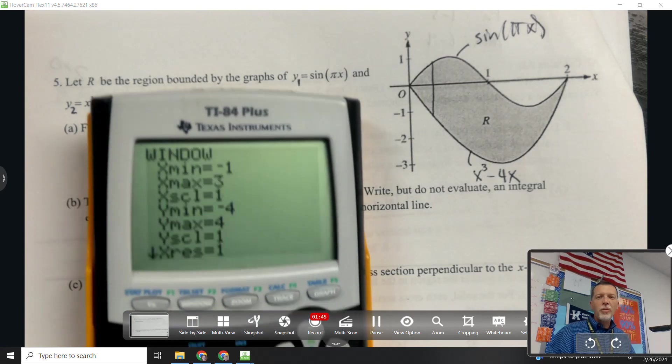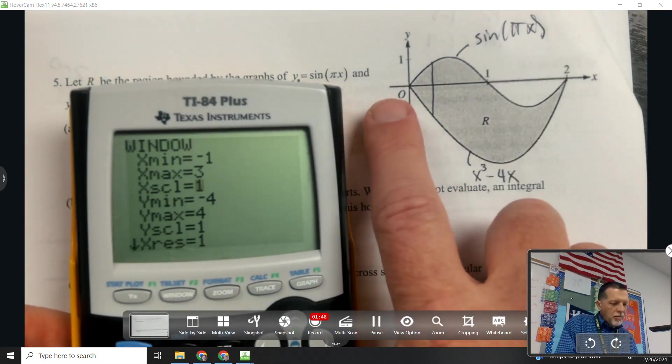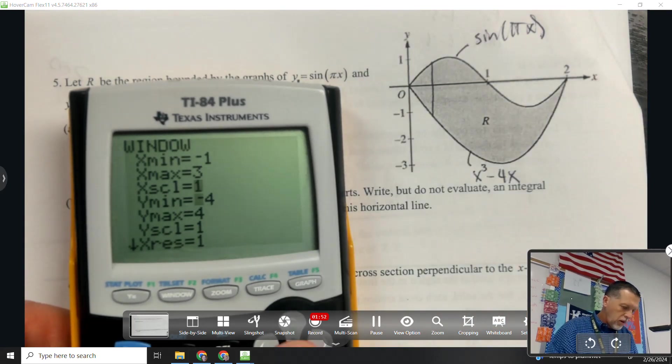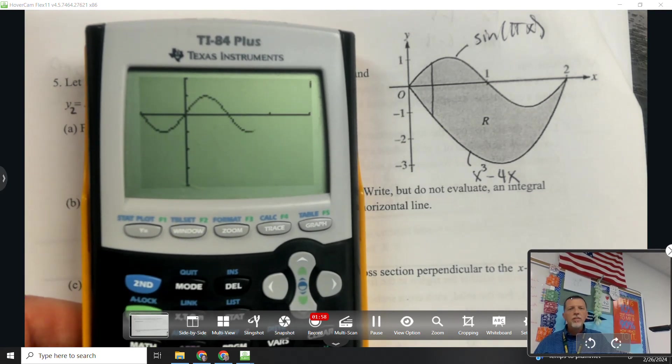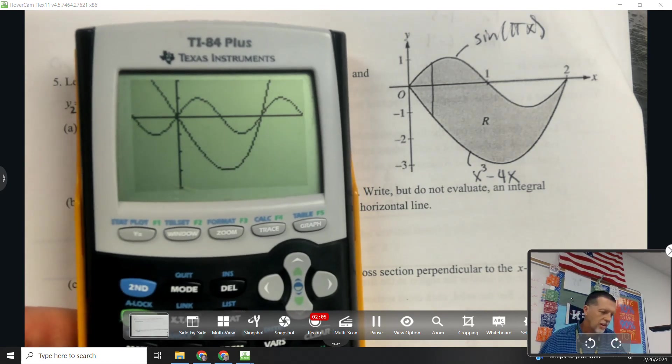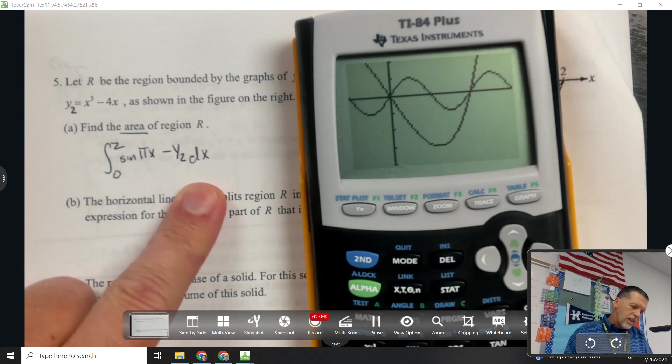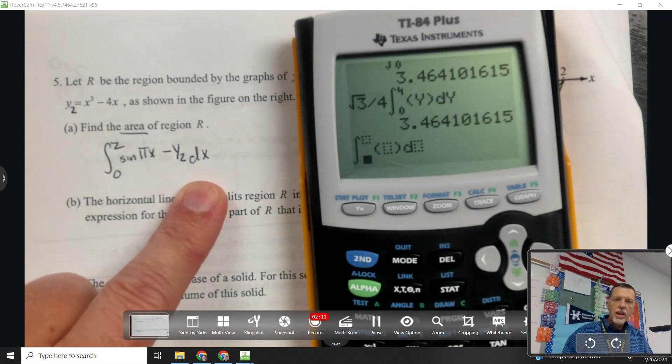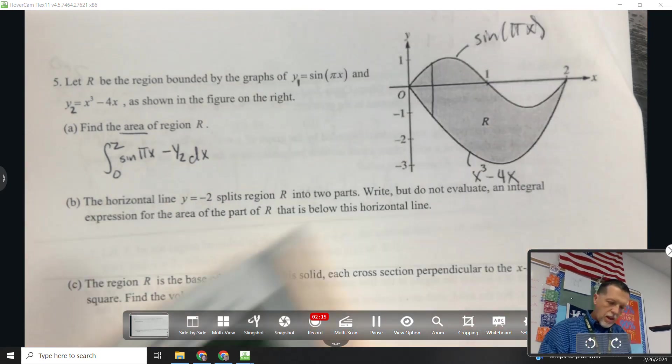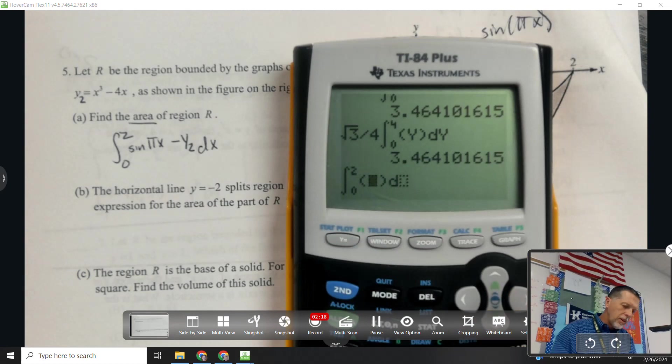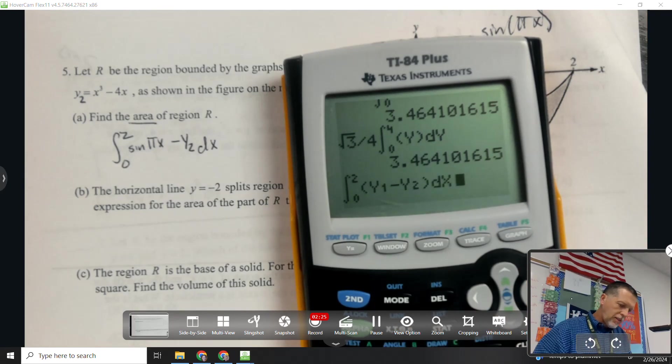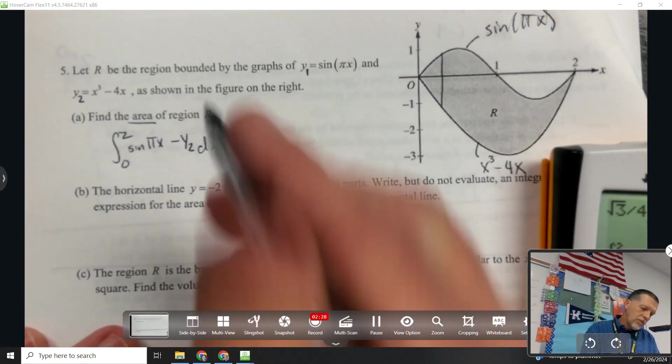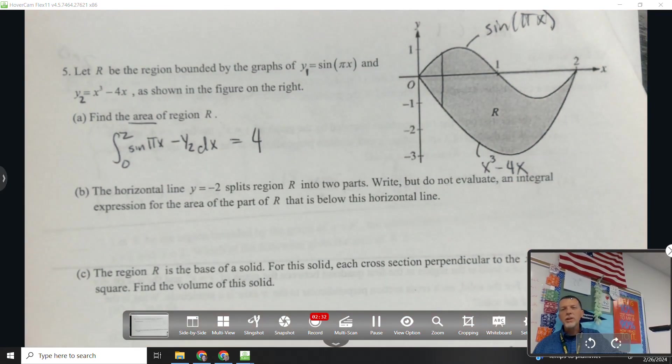May as well graph it to make sure I'm looking at the right thing. It's nice when they sort of provide the window for me. I'm going to go one past it, so I'm going to go negative 1 to 3, and then negative 4 to 2. My picture should look pretty similar to the picture they give us there. So there's the sine graph, and then there's the x cubed graph. So I think I'm ready to do math 9. 0 to 2, y1 minus y2 dx. And that area is just 4. That's kind of weird that it worked out nice and neat.